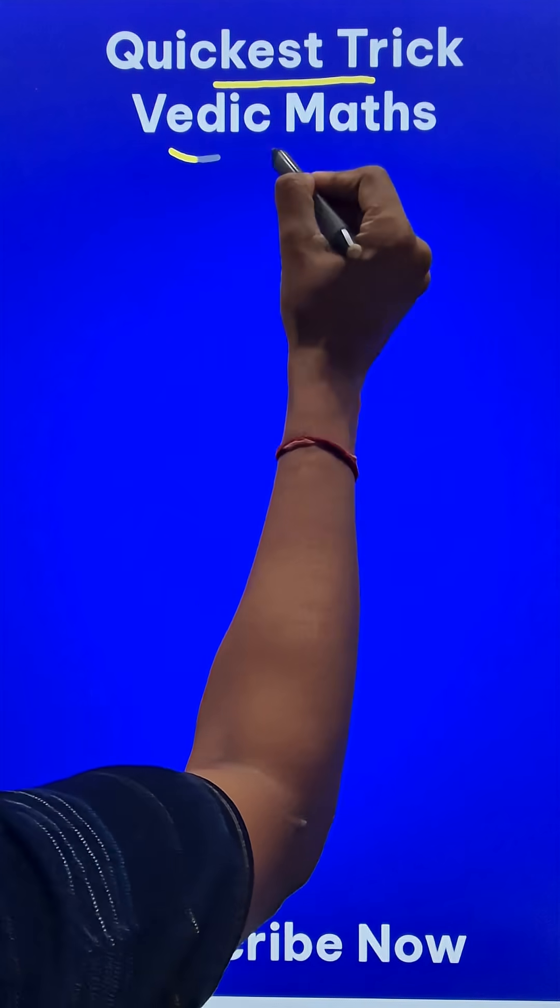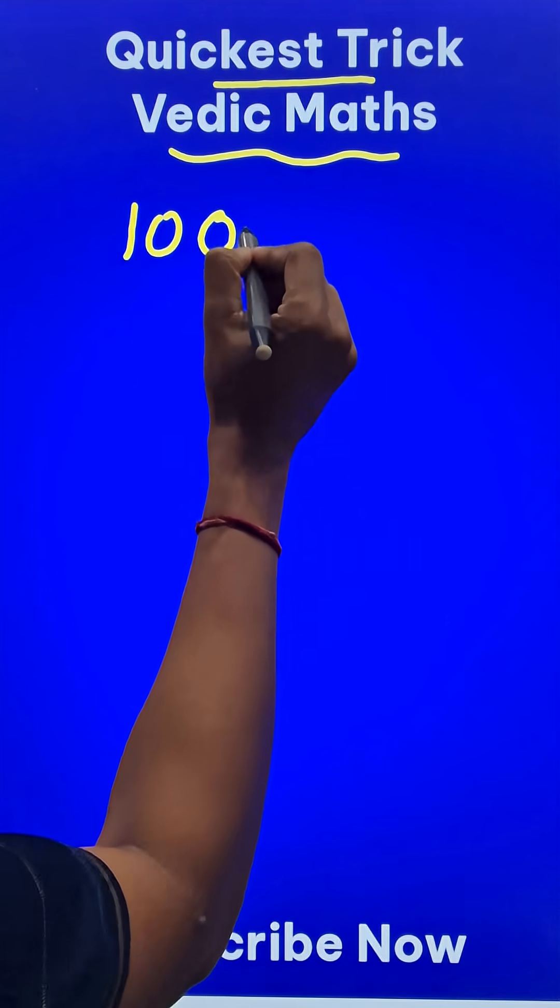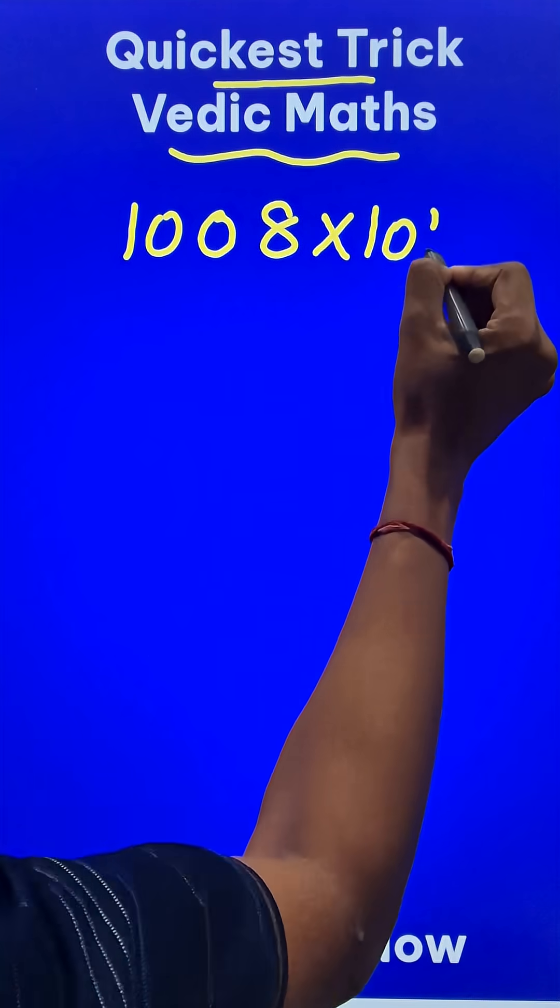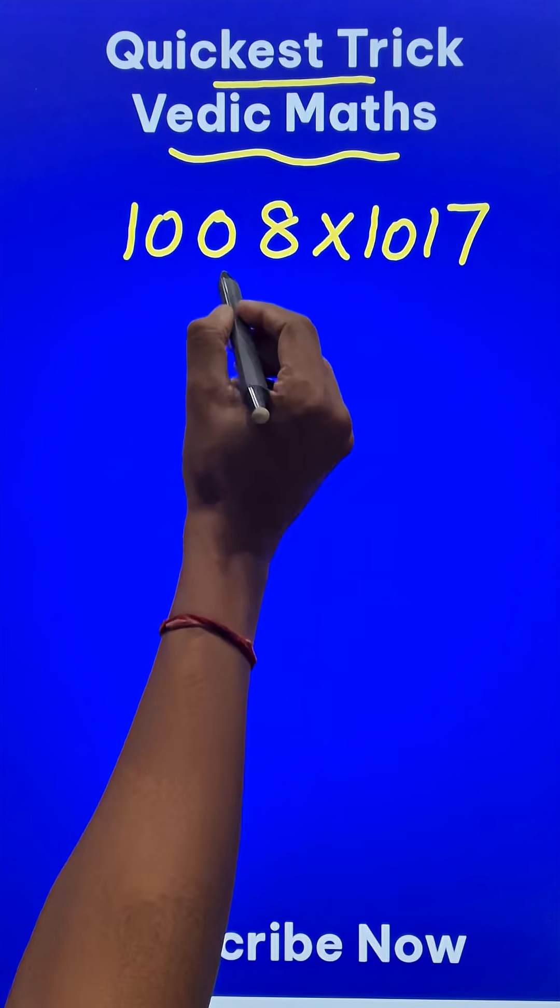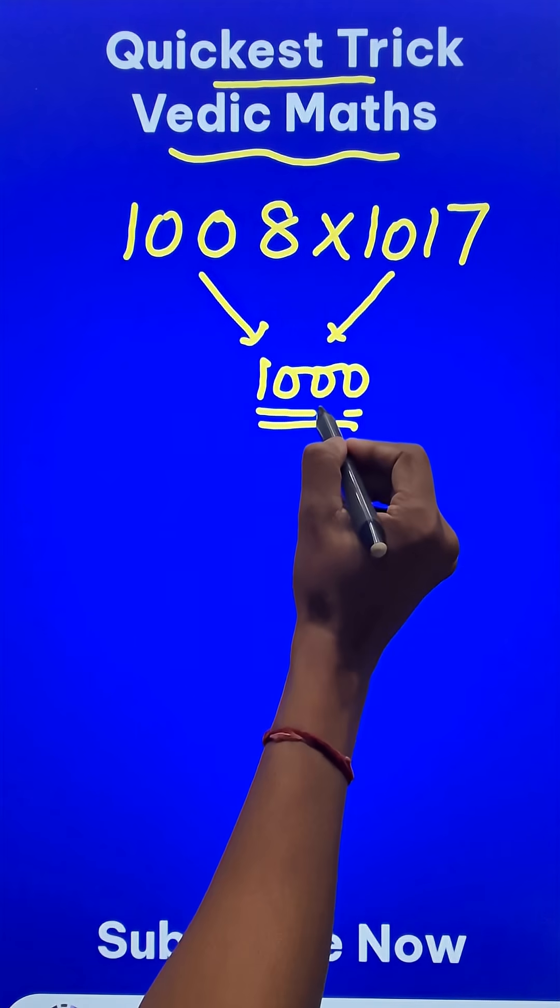Here is the quickest trick in Vedic Maths. This is when you have to multiply numbers which are close to a common base like 1008 and 1017. So both of these numbers are very close to 1000 and therefore this is the common base.